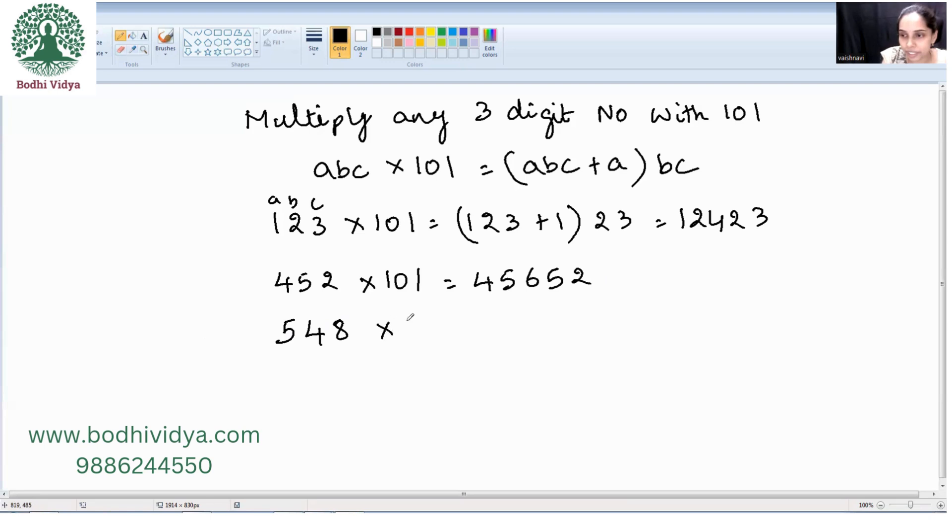548 into 101. So it is 548 plus 5, so it is 553 and 48. One more example: 375 into 101. 375 plus 3 is 378 and append that BC, that is 75.